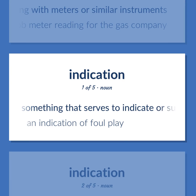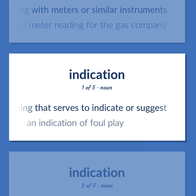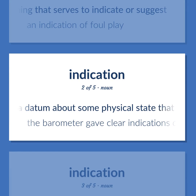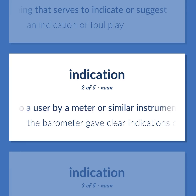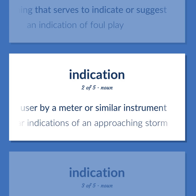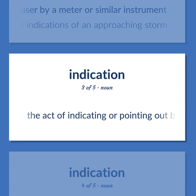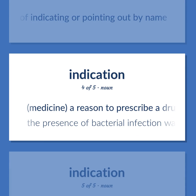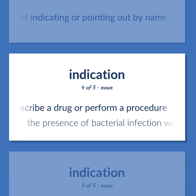INDICATION: Something that serves to indicate or suggest — an indication of foul play. A datum about some physical state presented to a user by a meter or similar instrument — the barometer gave clear indications of an approaching storm. The act of indicating or pointing out by name. Medicine: a reason to prescribe a drug or perform a procedure — the presence of bacterial infection was an indication for the use of antibiotics.